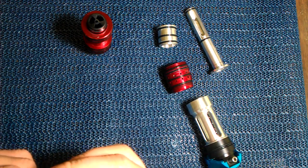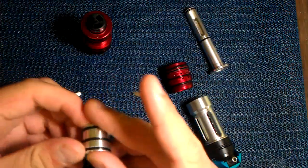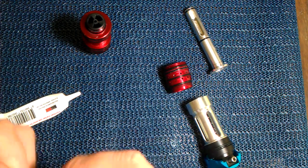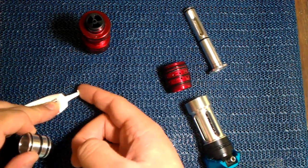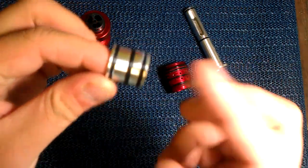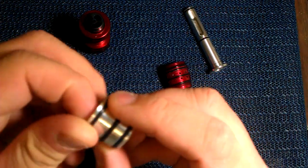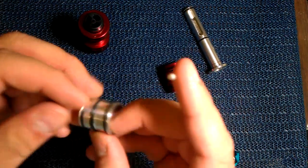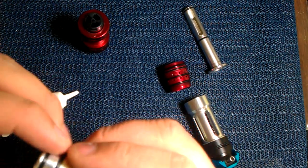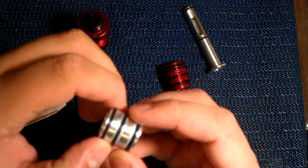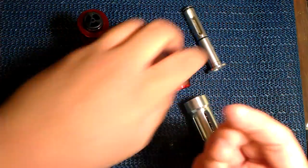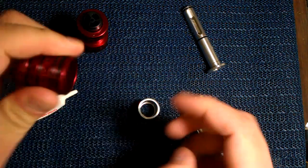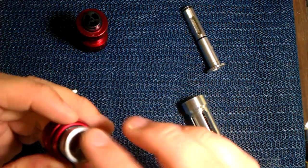What can cause leaks or bad consistency would be too much lube or not enough lube. Also, either one of these o-rings on the can here, or the valve, could cause leakage or inconsistencies. You just want to make sure that these o-rings are always good. And again, whatever you have left on your finger, just wipe it on the inside here. Pop this back in.